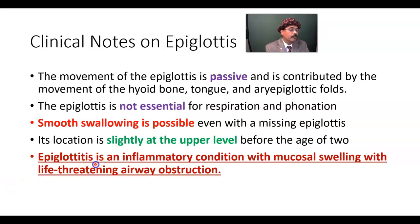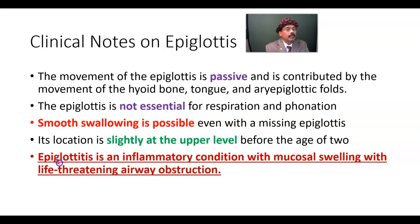Epiglottitis is an important inflammatory condition involving mucosal swelling, and it is life-threatening due to airway obstruction. It commonly occurs in children, but adults may also be affected. It may be caused by infection, such as Haemophilus influenzae, or by trauma to the epiglottis. Historically, epiglottitis is related to the death of President Washington — historians and doctors suspect that associated epiglottitis played a role, alongside a peritonsillar abscess.